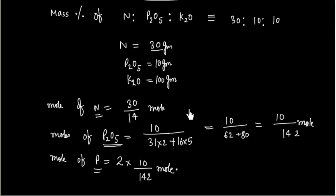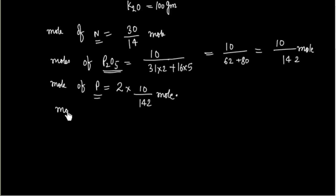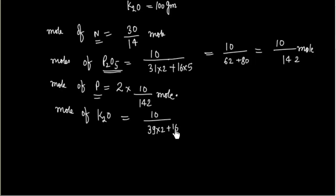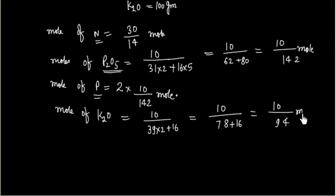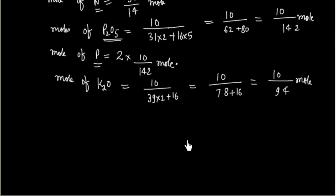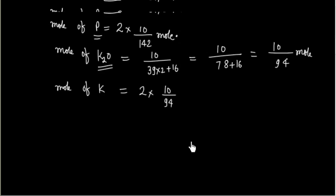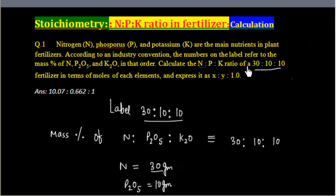Similarly, moles of K₂O equals mass divided by molecular mass. The molecular mass of K₂O is 39×2 plus 16, which is 78 plus 16 equals 94. So moles of K₂O equals 10 divided by 94. Since each mole of K₂O contains 2 moles of Potassium, moles of Potassium equals 2 times 10 divided by 94, which is 20 by 94.